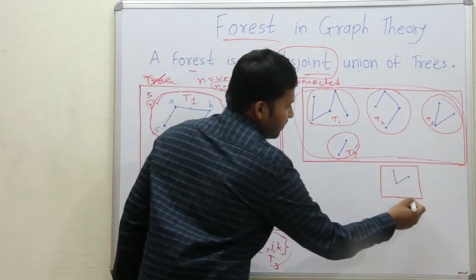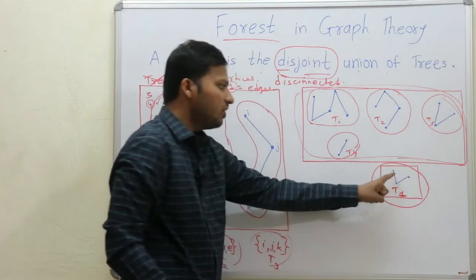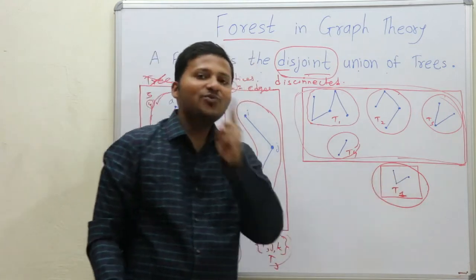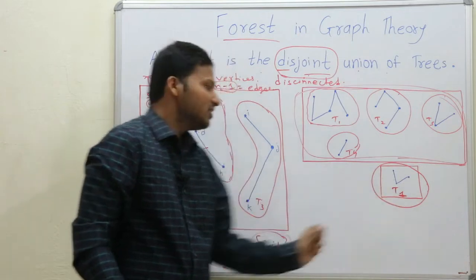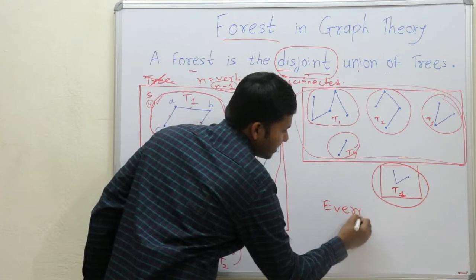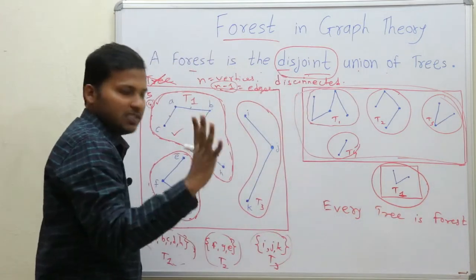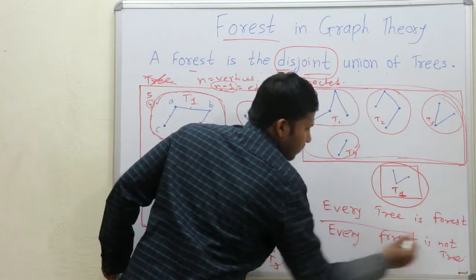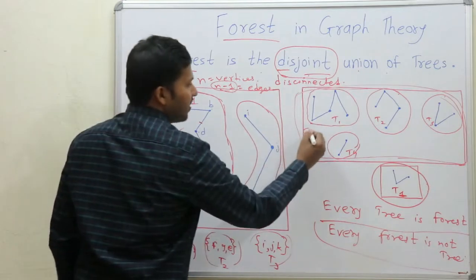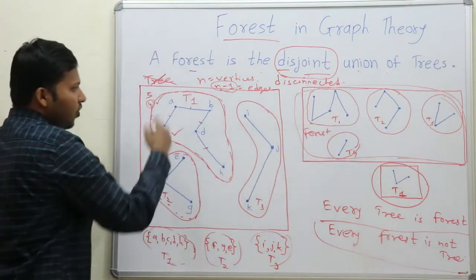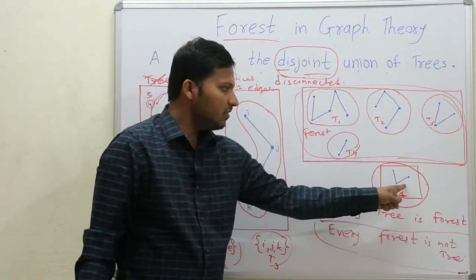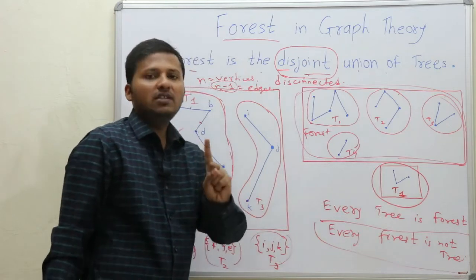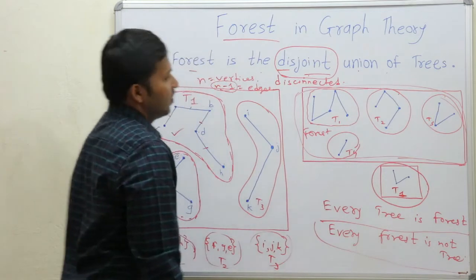Here is another example of a forest — a graph with only one tree is also a forest. So every tree is a forest, meaning a single tree counts as a forest. But every forest is not a tree. A forest with multiple disconnected components is a forest but not a tree. Only when there is just one tree can it also be called a forest and a tree.